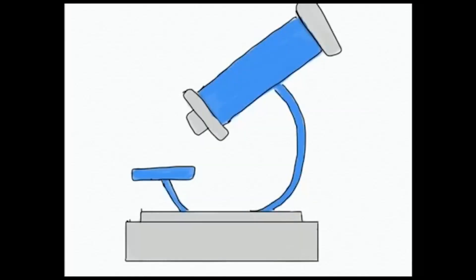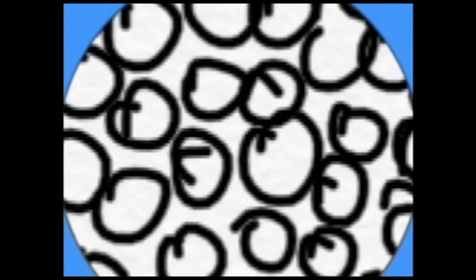A cell looks like this. Cells are extremely tiny — tinier than this little dot right there. We'll need a microscope to look at it. There we go. Wait, cells don't have color. Much better.